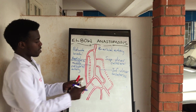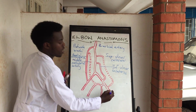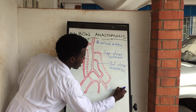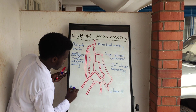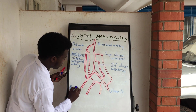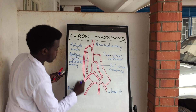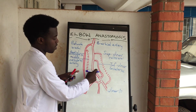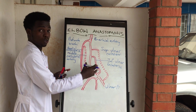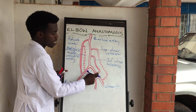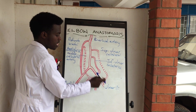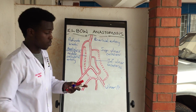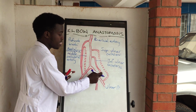The brachial artery continues and gives off the ulnar artery and the radial artery. The ulnar artery, where it bifurcates in the cubital fossa, gives off its first branch. The point of branching varies from person to person.